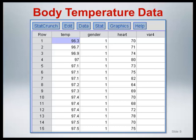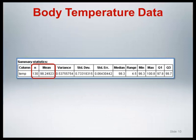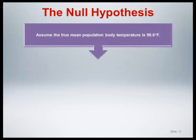Let's use the body temperature data from the homework assignment in Module 3 to illustrate the calculation and interpretation of a p-value. Note that this example is also discussed by Motulski in the reading assignment for this module. The sample was comprised of 130 healthy adults with a mean body temperature of 98.25 degrees Fahrenheit. This data set was derived from a 1992 JAMA article that provided a critical examination of the historically assumed value of 98.6 degrees Fahrenheit for normal oral body temperature in healthy adults. As such, a natural null hypothesis value is the traditional 98.6 degrees Fahrenheit.